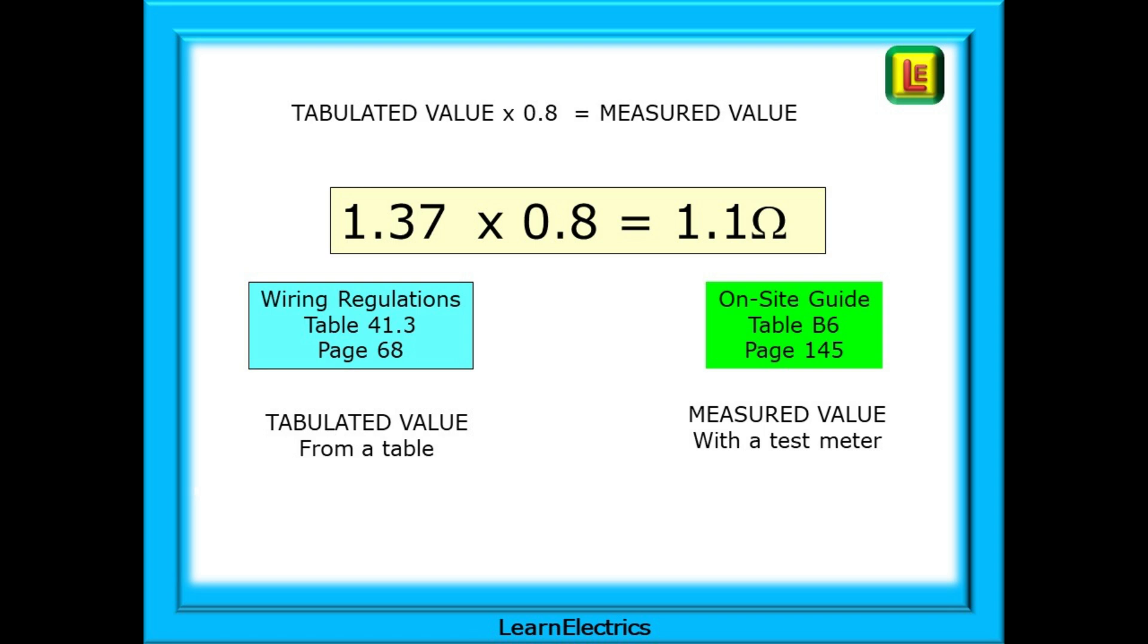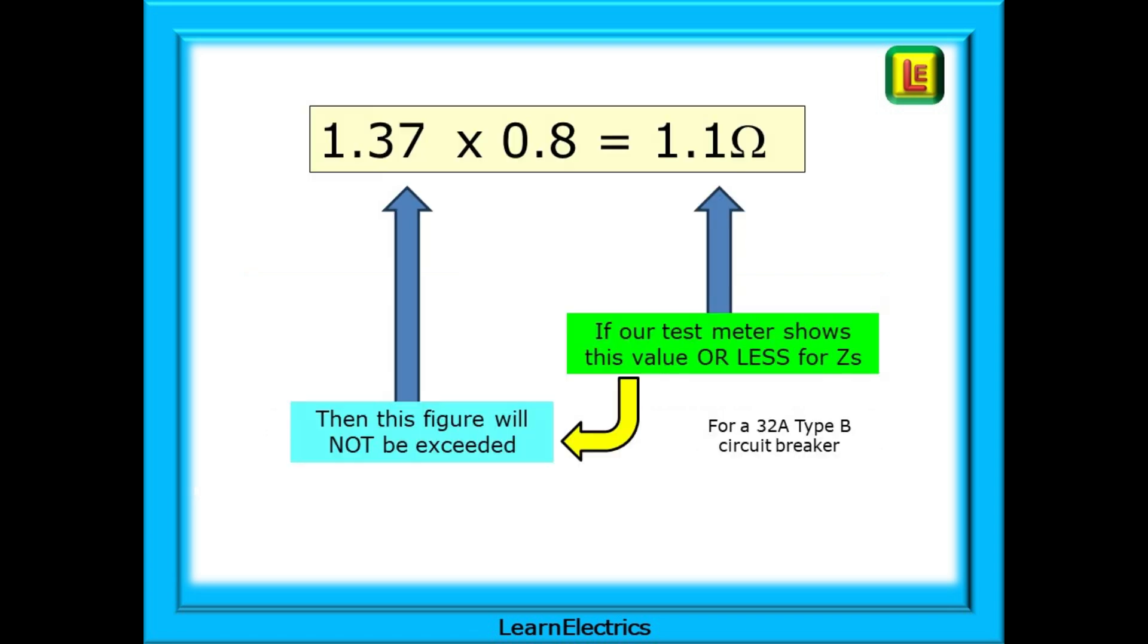1.37 multiplied by 0.8 equals 1.1 ohms. This 1.1 ohms is called a measured value. It's the ZS that we will measure with our test meters when on site. We've taken the tabulated value from a table in the wiring regs multiplied by 0.8 and arrived at our measured value. What this means is that for the 32 amp type B breaker if our test meter shows 1.1 ohms or less for ZS then 1.37 ohms is not going to be exceeded at 70 degrees Celsius.